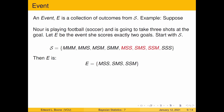Now we're interested in exactly two goals. The only outcomes that have exactly two scores are: miss-score-score, score-miss-score, and score-score-miss. So E equals {MSS, SMS, SSM}. Notice that our sample space had eight outcomes and our event has three outcomes.